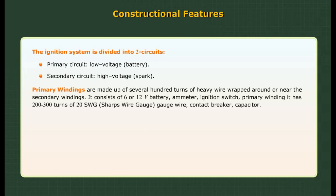Primary windings are made up of several hundred turns of heavy wire, wrapped around or near the secondary windings. The primary circuit consists of a 6 or 12 volt battery, ammeter, ignition switch, and primary winding. It has 200 to 300 turns of 20 SWG (Standard Wire Gauge) wire, along with a contact breaker and capacitor.